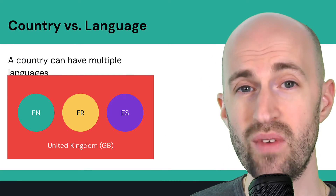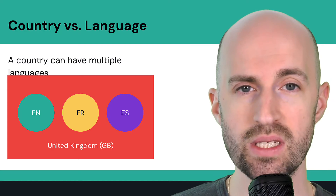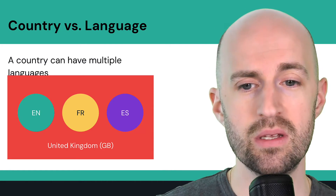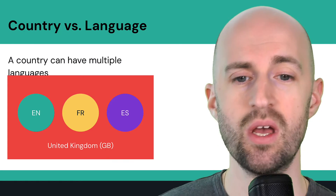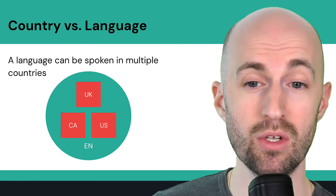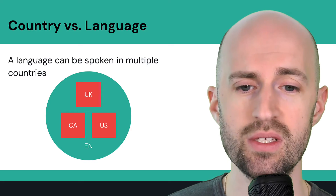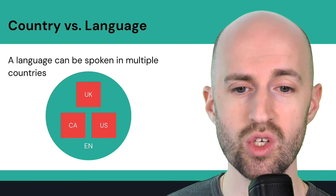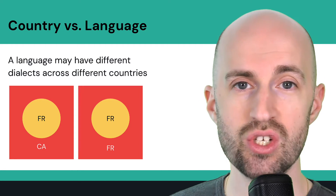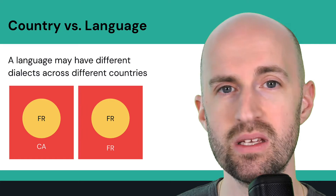Let's talk about different combinations and configurations. A country can have multiple languages — take the UK, for example, where English, French, and Spanish are among the main ones spoken. Conversely, a language can be spoken in multiple countries — English is spoken in the UK, Canada, US, Australia, New Zealand, and many others — so you might want a website targeting different countries but still in English. A language may also have different dialects; for example, French has French Canadian and French France, with cultural differences, spellings, and sayings.